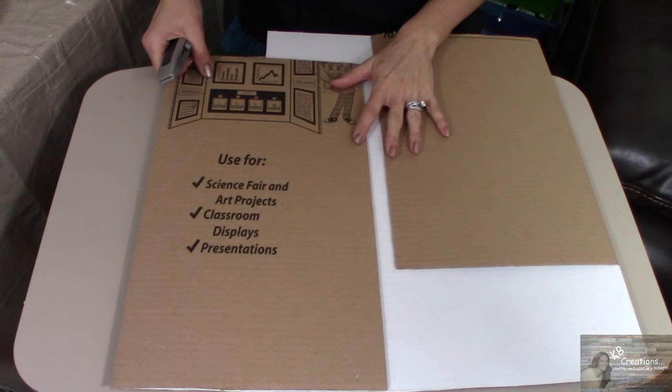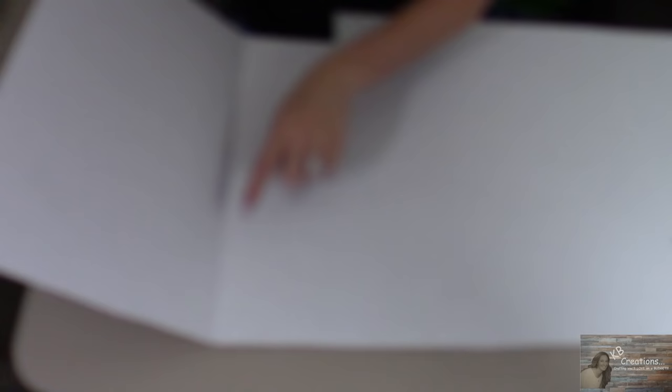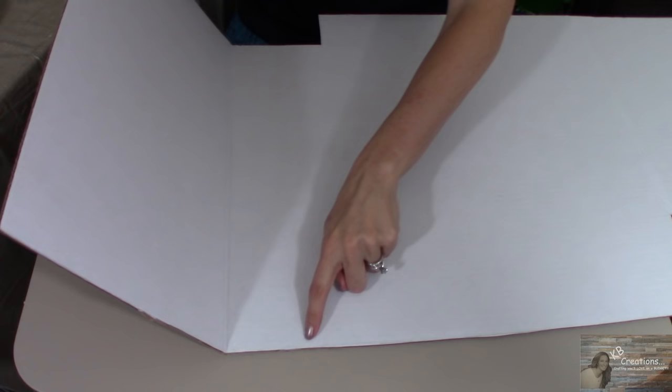Next, I'm going to take the tri-fold display board that I picked up from the Dollar Tree. I've used this in three other projects. This will be the fourth project. What I'm going to do is, where the existing crease is in this cardboard, I'm going to go down about two inches and I'm going to cut across the board.